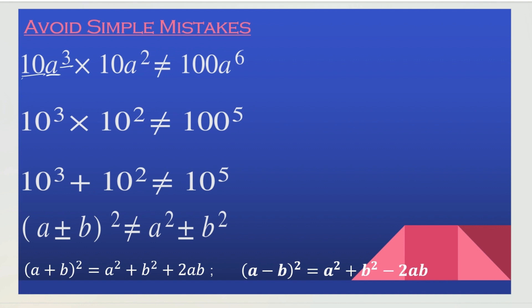The right way to do this is using the product rule. So the answer is going to be 100, a, to the exponent of 3 plus 2. We know that 3 plus 2 equals 5, so the answer is going to be 100a to the exponent of 5. The mistake here is that they multiplied the exponent, but really you're supposed to add it.